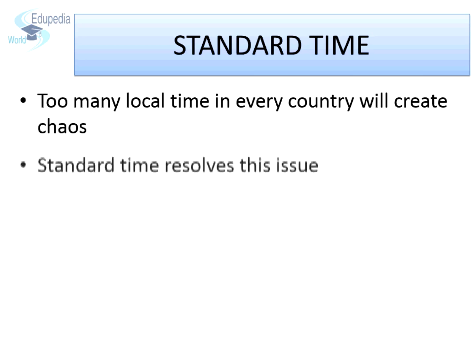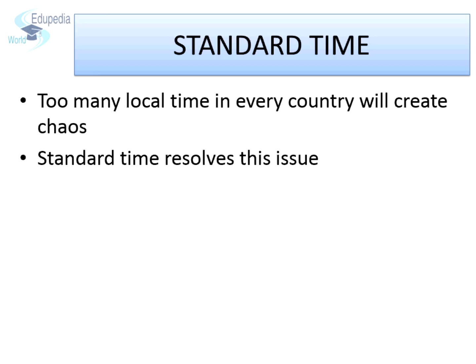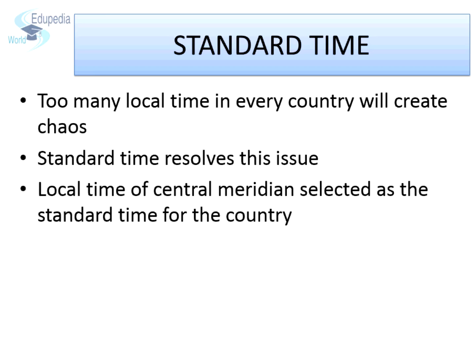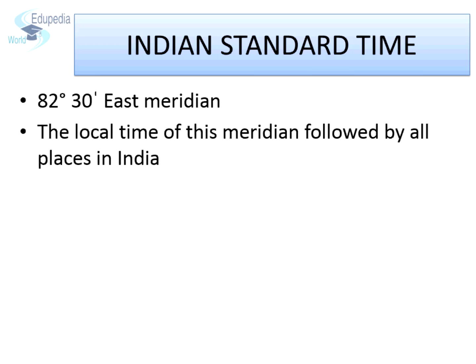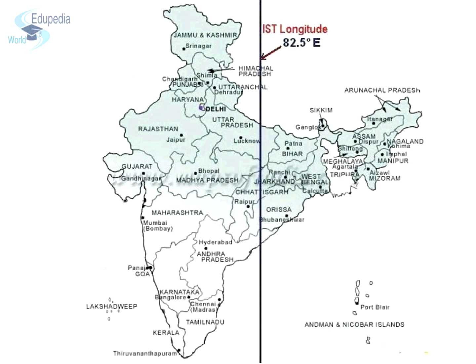If every place in India followed its own local time, there would be confusion over railway timings, flight timings, etc. To solve this problem, the local time of a particular meridian is taken as the standard time for the entire region or the whole country. In India, the local time at Allahabad, which is located at 82 degrees 30 minutes east meridian, is taken as the standard meridian time. This meridian was chosen because it passes through more or less the center part of India. Most standard meridians pass through almost the middle of their respective countries and are also multiples of 7.5.